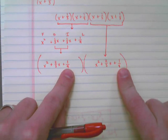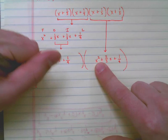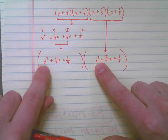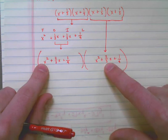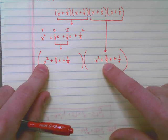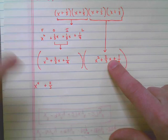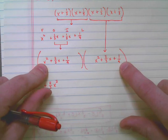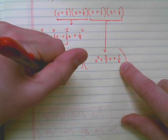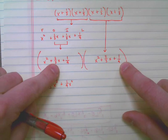x squared times x squared gives me x to the fourth. x squared times two-thirds x gives me two-thirds x cubed. x squared times one-ninth gives me one-ninth x squared. So done with the x squared. I've distributed it three times.